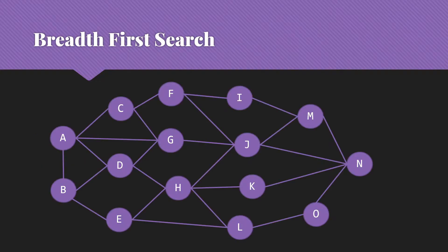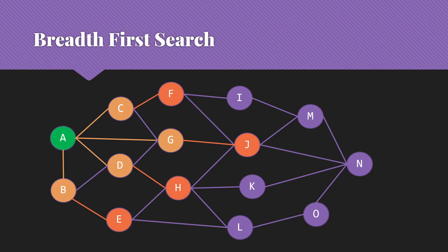Our solution for finding shortest paths in an unweighted graph is something we call breadth-first search. The basic idea is that I'm starting at a point — the source for my single source shortest path problem — and I'm next going to look at all the nodes that are directly connected to this one, so all the things that are one edge away. Then I'll look at all the nodes that are two edges away, then three edges away, and finally the nodes that are four edges away. This gives us shortest paths in terms of the number of edges.